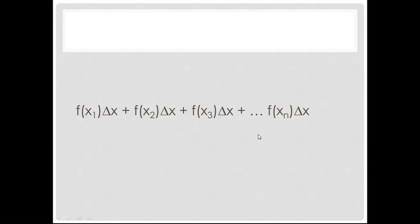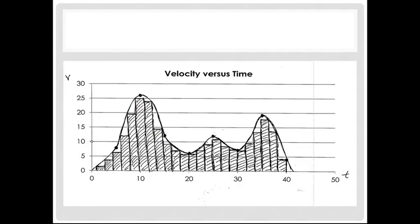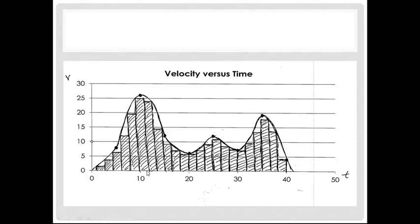So the more n's we have, that is, the more times we divide this up, the closer and closer we're going to get to the actual total area under that curve.